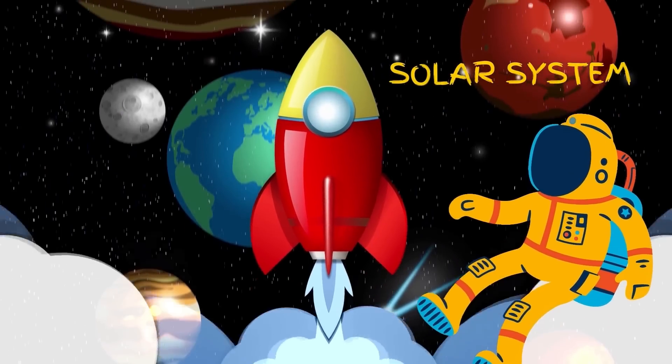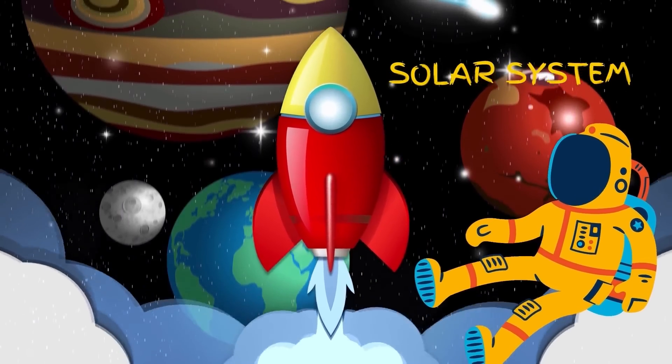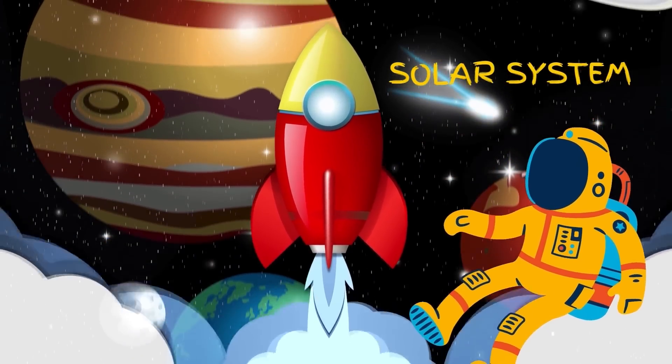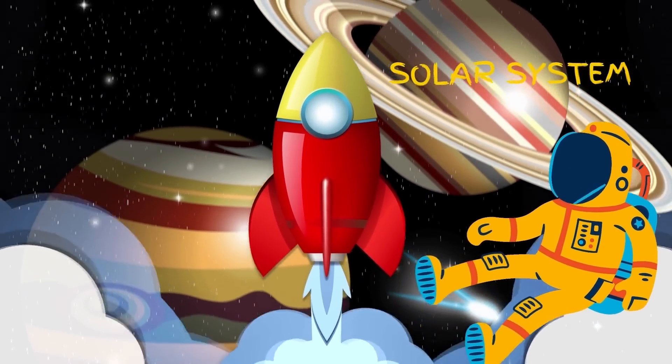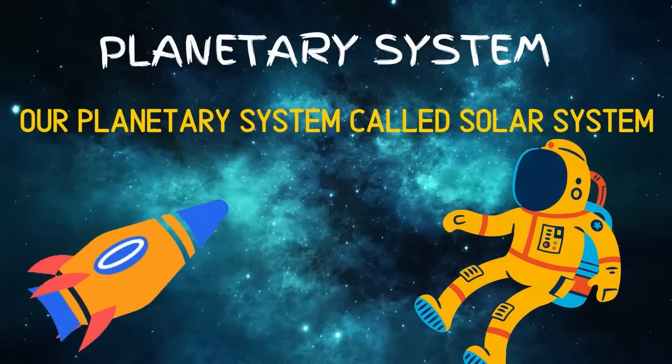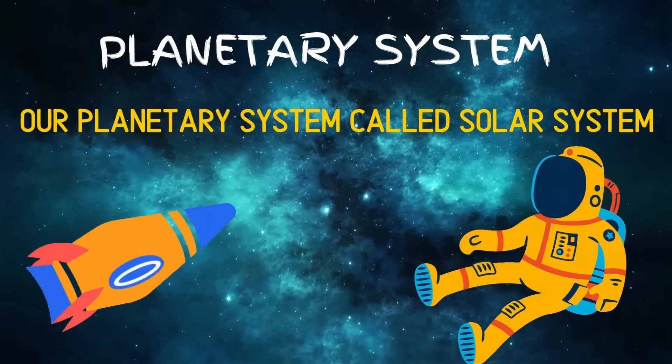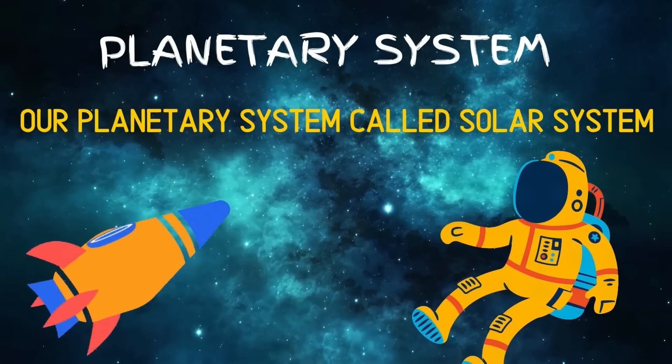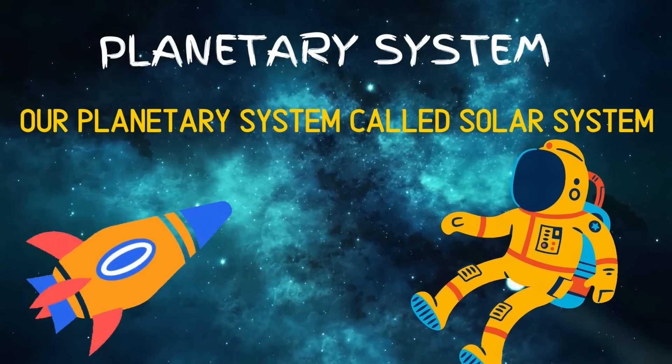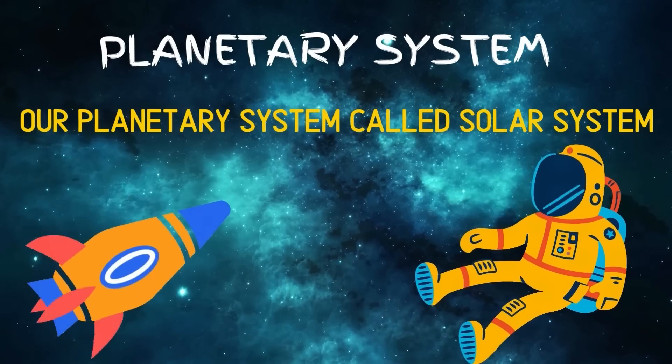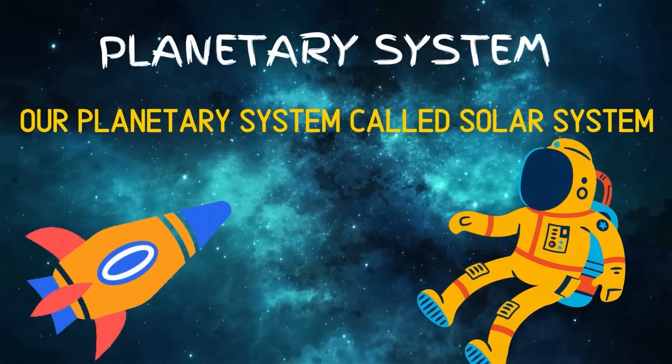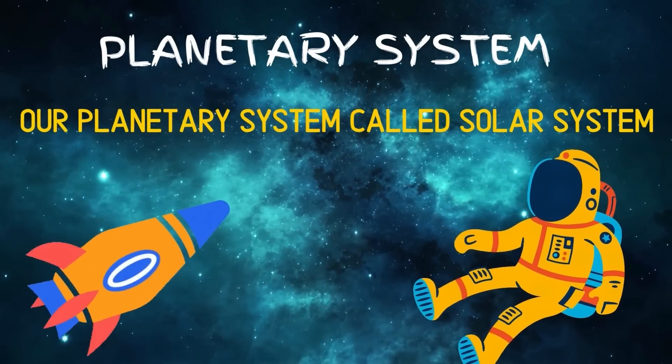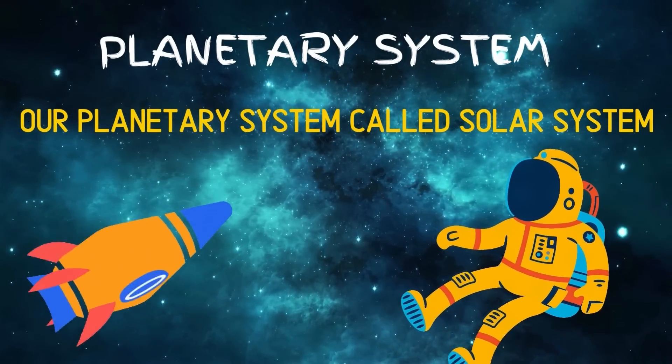I am an astronaut and this is my spaceship. Today we are going to space to learn about our solar system. There are many planetary systems in the universe and our planetary system is called the solar system. We call it the solar system because of the sun. In Latin, sun is called solis, that's why we call our planetary system the solar system.